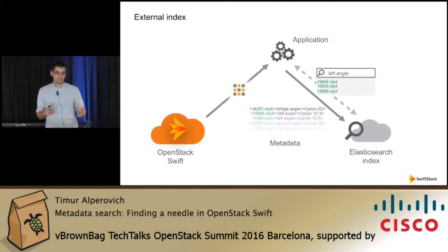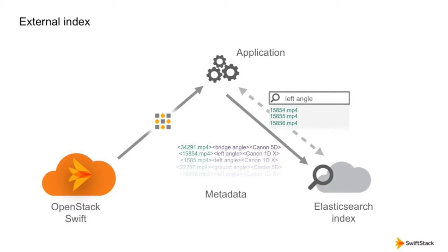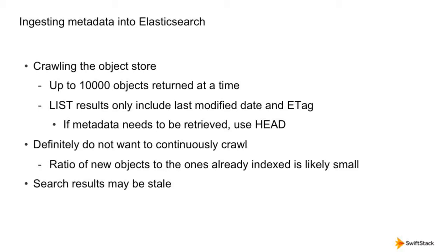What a lot of companies in this situation do is set up a secondary index, for example Elasticsearch. An application uploads all of the metadata to Elasticsearch, issues queries against it, and then goes to OpenStack Swift to retrieve objects. We'd like to collapse the ingestion of metadata into Elasticsearch with your Swift workflow. You could crawl the object store manually, getting 10,000 objects at a time when listing. Unfortunately, you'd have to do a HEAD request per object to get its metadata, which is very expensive. You definitely don't want to crawl continuously, because the ratio of new data to already-indexed objects is likely unfavorable.